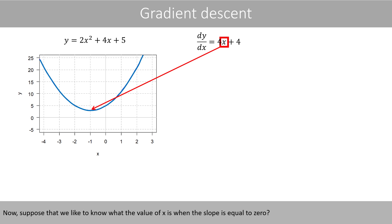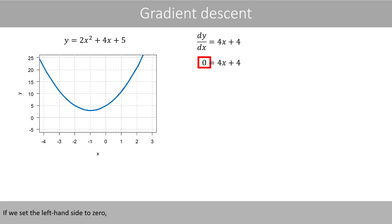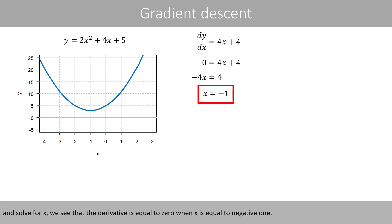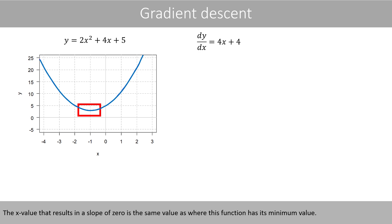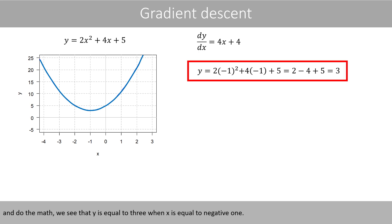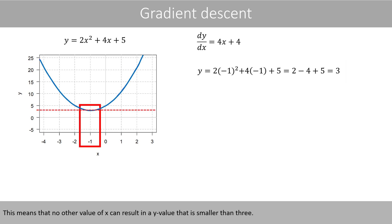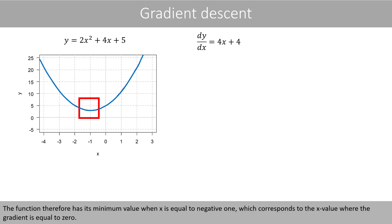Now, suppose that we like to know what the value of x is when the slope is equal to zero. If we set the left-hand side to zero and solve for x, we see that the derivative is equal to zero when x is equal to negative 1. The x value that results in a slope of zero is the same value as where this function has its minimum value. If we set x to negative 1 in this equation and do the math, we see that y is equal to 3. This means that no other value of x can result in a y value smaller than 3. The function therefore has its minimum value when x is equal to negative 1, which corresponds to the x value when the gradient is equal to zero.